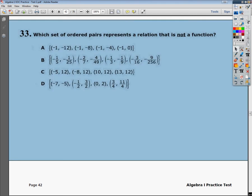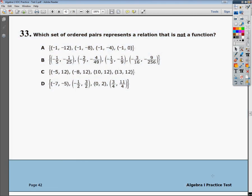Welcome, this is the Algebra 1 end of course practice test 2, which if you don't get it from your teacher probably came from the website. Question number 33 says, which set of ordered pairs represents a relation that is not a function?